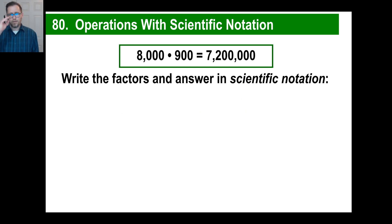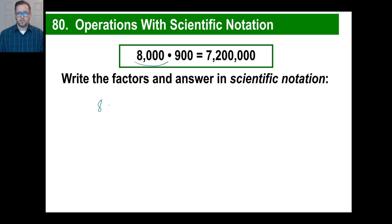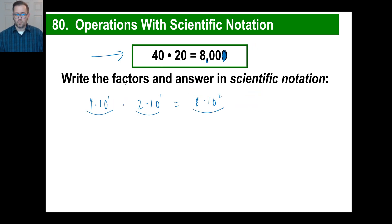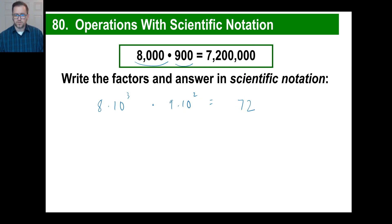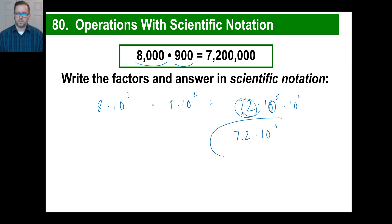Last one: 8,000 times 900 equals 7,200,000. Written in scientific notation: 8 times 10 to the third, times 9 times 10 to the second. 8 times 9 is 72, and 10 to the third times 10 to the second — add the exponents: 3 plus 2 is 5. But 72 is more than 10, so we rewrite it as 7.2, and since we divided by 10 on one side, we multiply the exponent by 10 to the first, giving us 7.2 times 10 to the sixth.